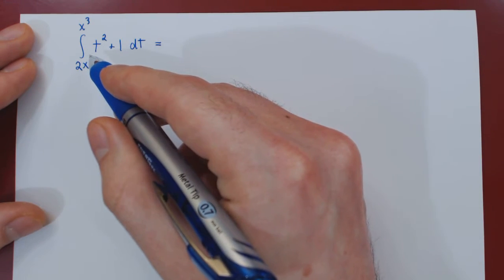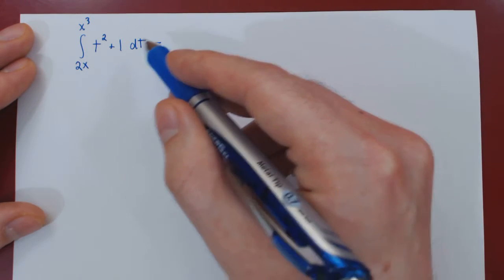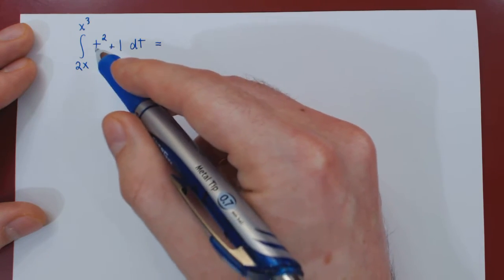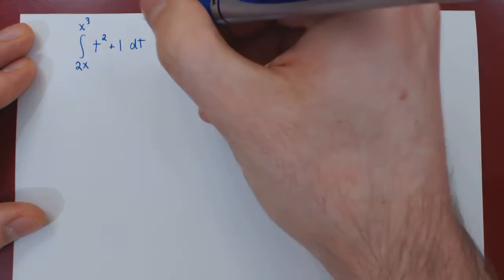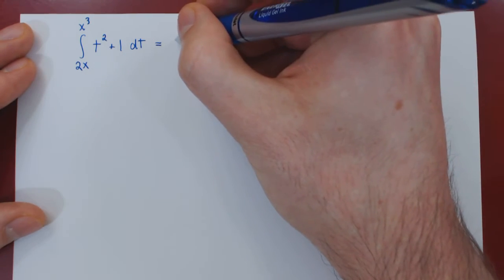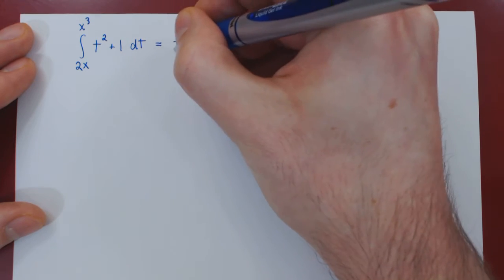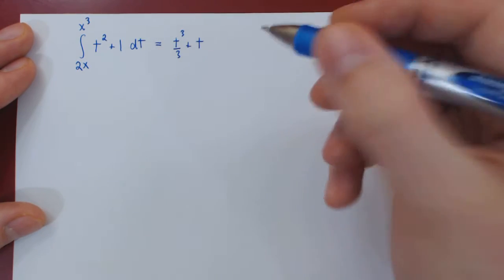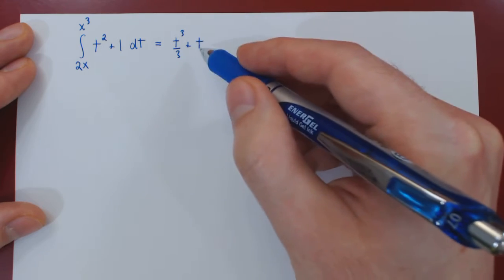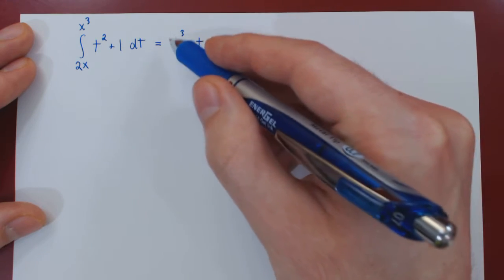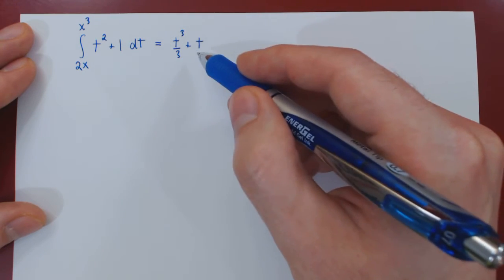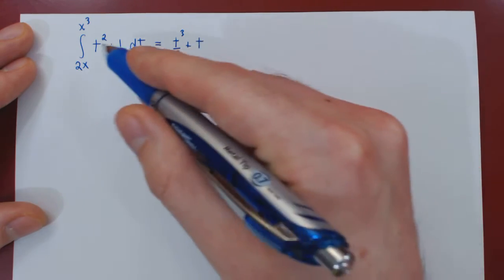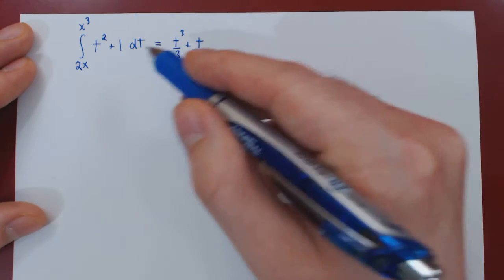We must first find an antiderivative with respect to t of the function t² + 1. Applying the power rule, this gives us t³/3 + t. You can easily check that this is the right antiderivative — if you differentiate this function with respect to t using the power rule, you will obtain t² + 1.